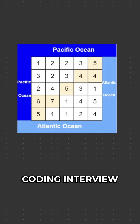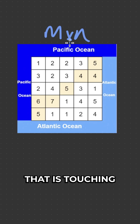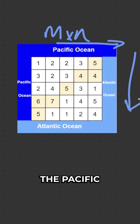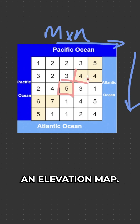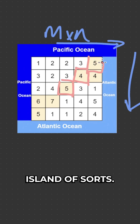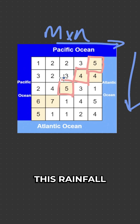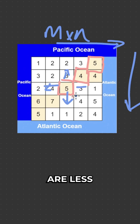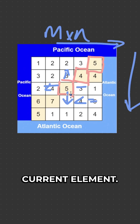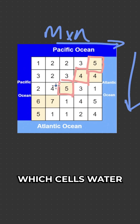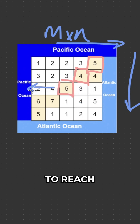Today we're looking at an extremely interesting coding interview question asked by Google. We have an M by N grid that is touching two oceans, the Pacific and Atlantic. The numbers within this grid represent an elevation map, so it's an island of sorts. This island receives a ton of rainfall throughout the year. This rainfall can flow to neighbouring elements as long as those elements are less than or equal to the current element. We need to work out which cells water can flow from in order to reach both the Pacific and Atlantic oceans.